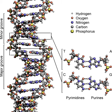The most common form of recombination is homologous recombination, where the two chromosomes involved share very similar sequences. Non-homologous recombination can be damaging to cells, as it can produce chromosomal translocations and genetic abnormalities. The recombination reaction is catalyzed by enzymes known as recombinases, such as Cre recombinase. In the first step, the recombinase creates a nick in one strand of a DNA double helix, allowing the nicked strand to pull apart from its complementary strand and anneal to one strand of the double helix on the opposite chromatid.